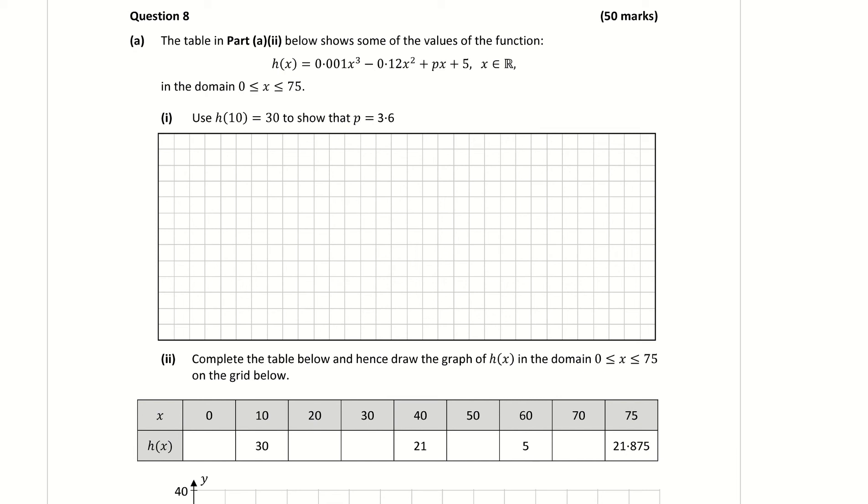That's about it for this first part of the question. So we're finding h of 10 is equal to 0.001, and my bracket and it's cubed here. So 10 cubed minus 0.12 times 10 to the power of 2 plus p times 10 plus 5.